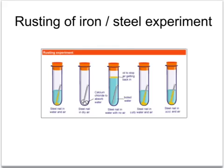The third tube has the nail in contact with water, but because the water has been boiled, that has driven out any dissolved air which may have been in it. To stop the air getting back in, there's a layer of oil over the top of the boiled water. So in this case, the nail is in contact only with water and no air.